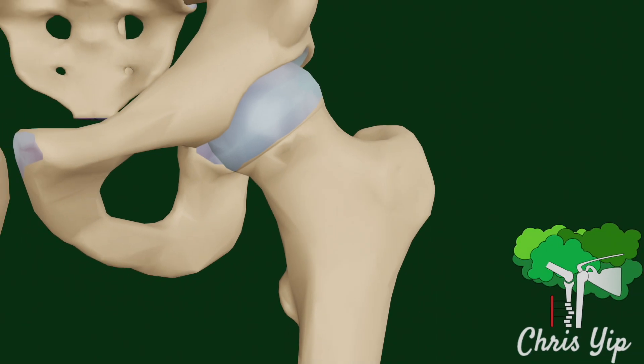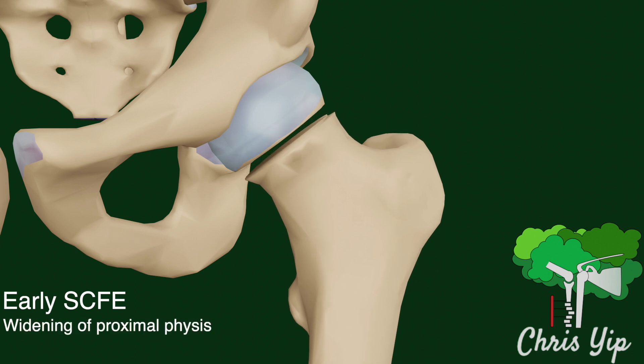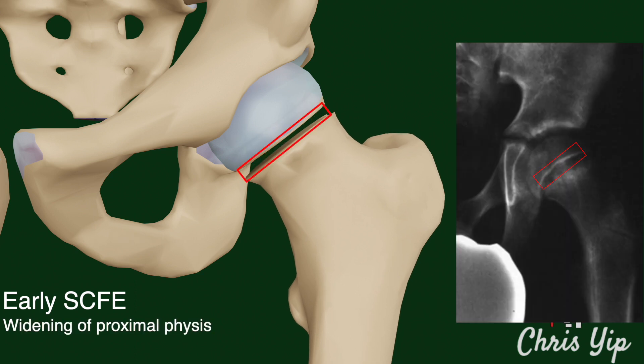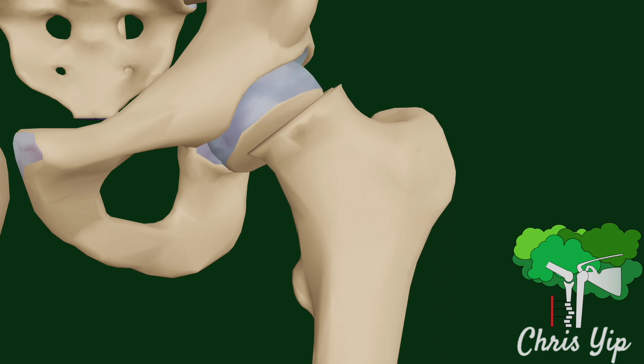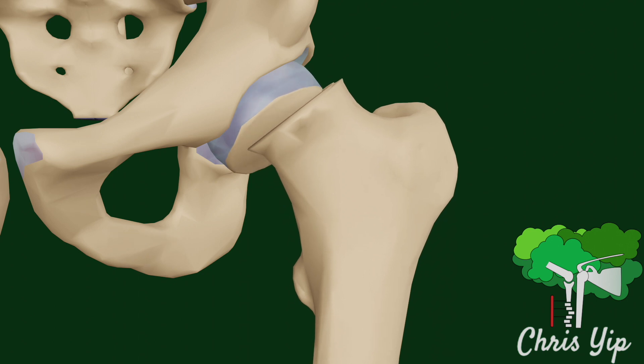The pathologies can be visualized on an AP view of a hip x-ray. The earliest sign of SCFE is a widening of the physis due to the detachment of the epiphysis from the metaphysis, which can also be referred to as the pre-slip phase. During the slip phase, the proximal epiphysis is displaced posterior, inferior, and medial to the metaphysis.